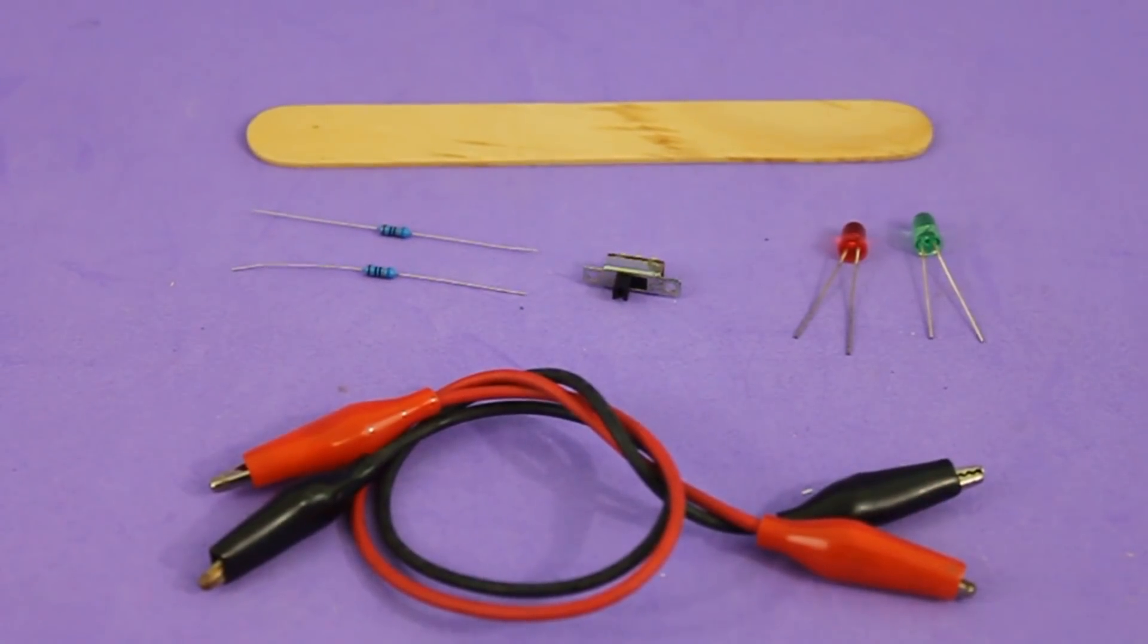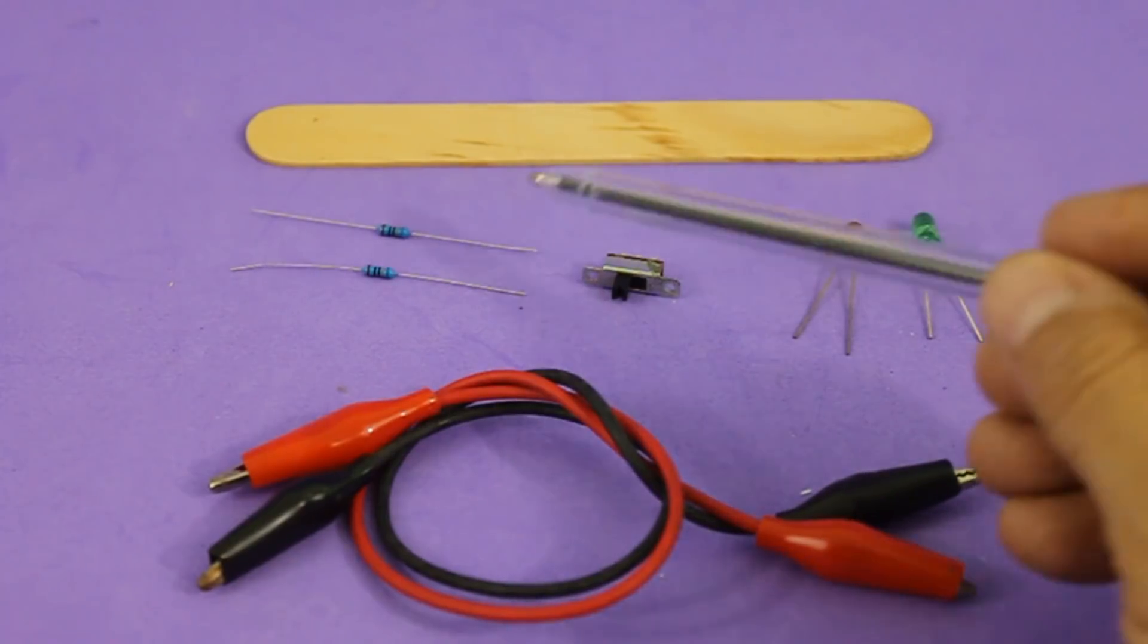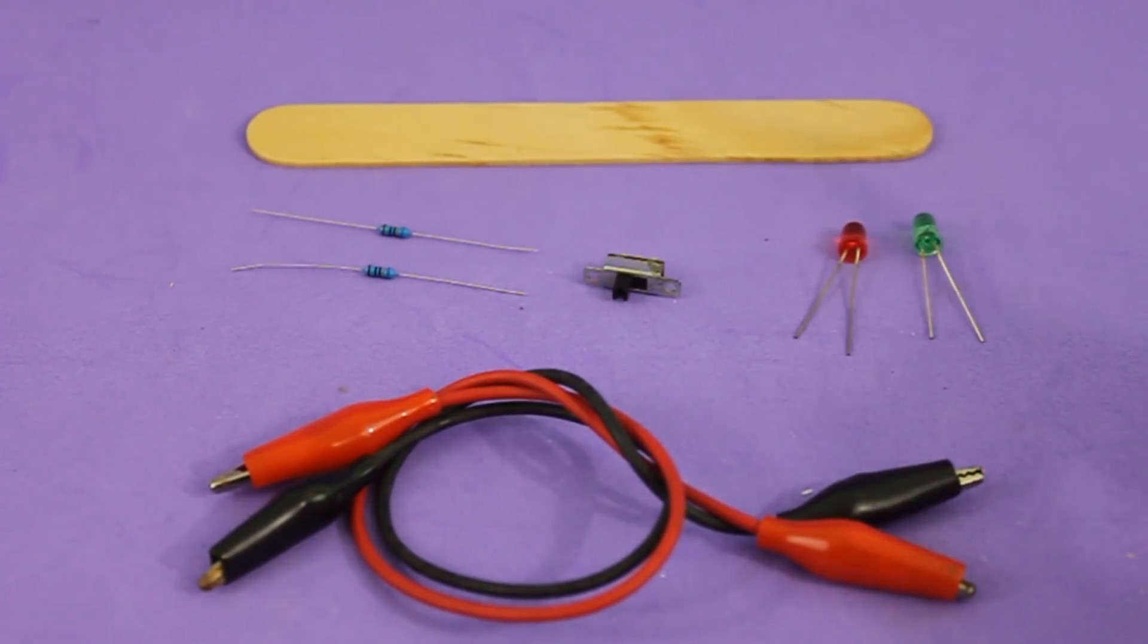For this project we need a woodstick, two LEDs, one green and one red, a switch, two resistors 680 ohms and a pair of alligator clips.